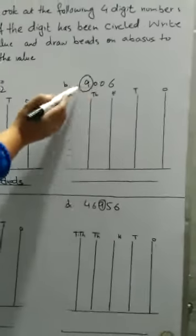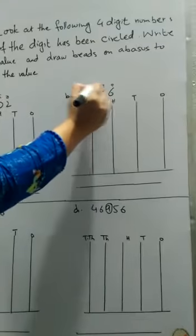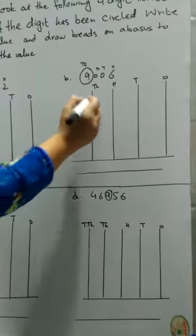Next, example B: 9,006. The nine is circled. Which place is nine in? The thousands place.